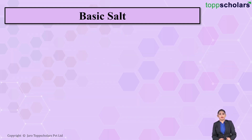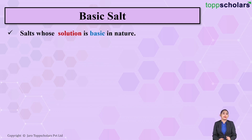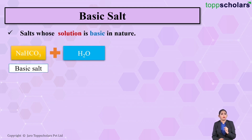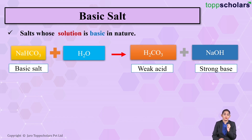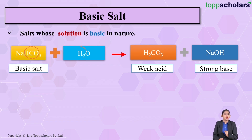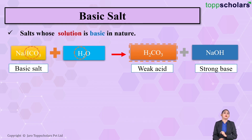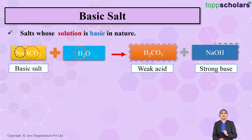Basic salts are salts whose solutions are basic in nature. Let's take the example of sodium bicarbonate, which is a basic salt. When we dissolve sodium bicarbonate in water, the bicarbonate ion combines with the H⁺ ions of water, resulting in the formation of carbonic acid H₂CO₃, which is a weak acid. Whereas the sodium ion combines with the OH⁻ ions of water, giving us NaOH — sodium hydroxide — which is a strong base.